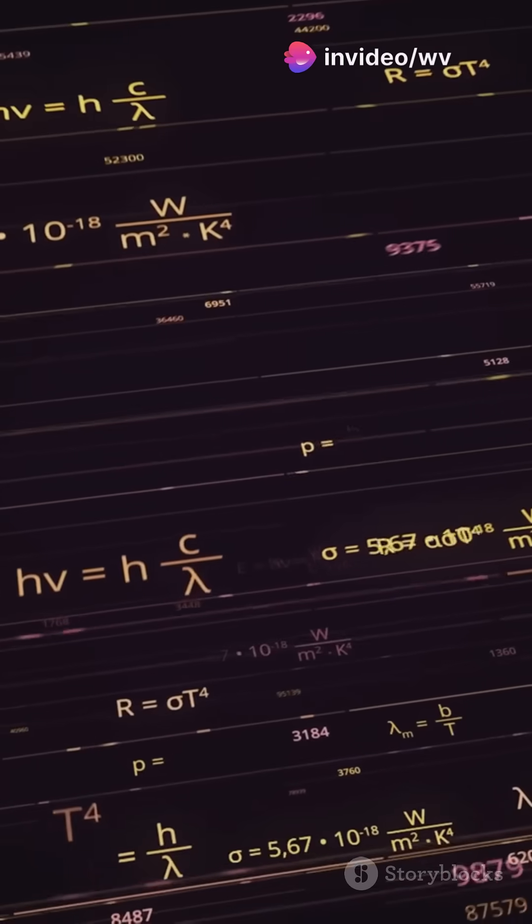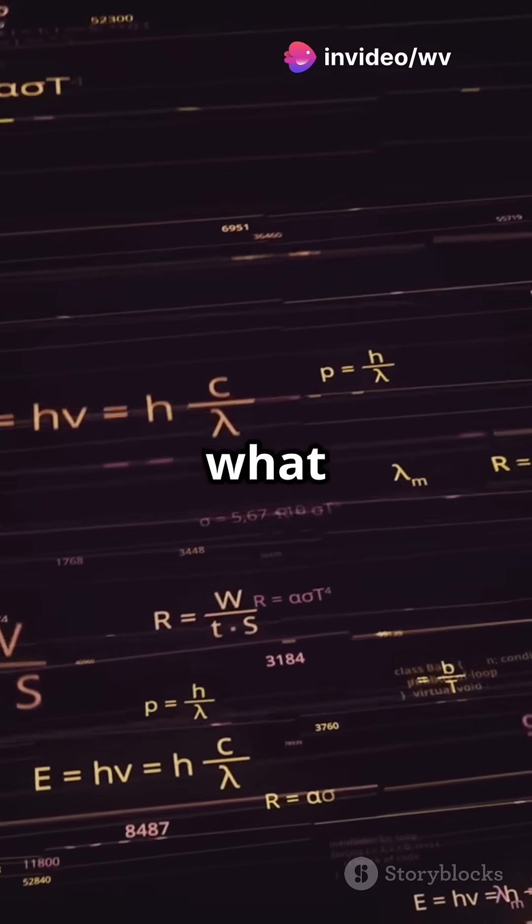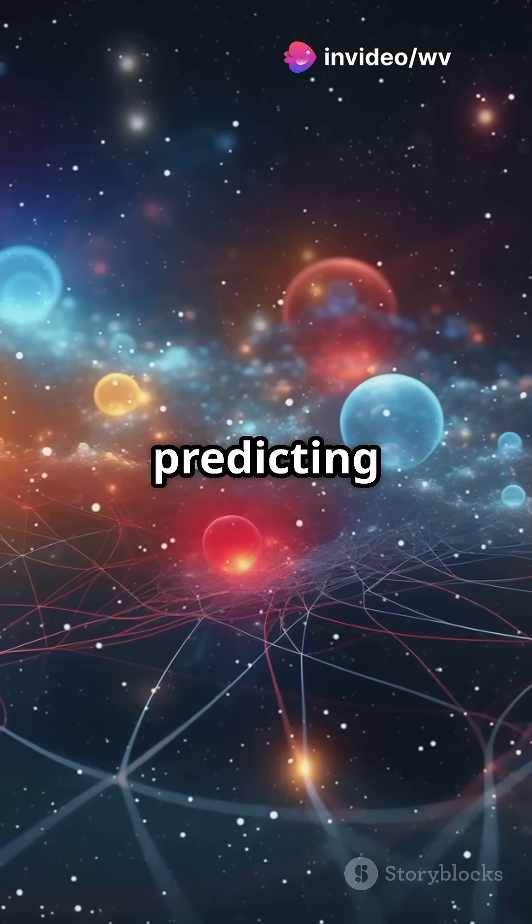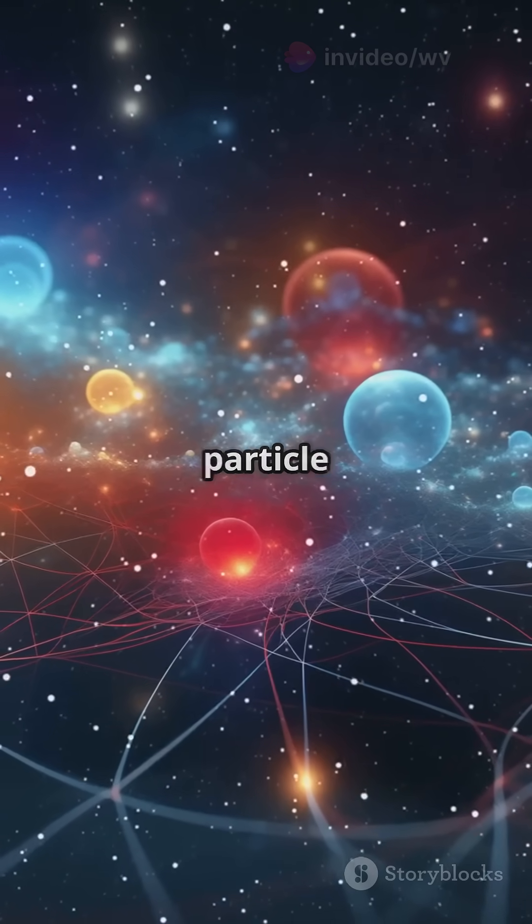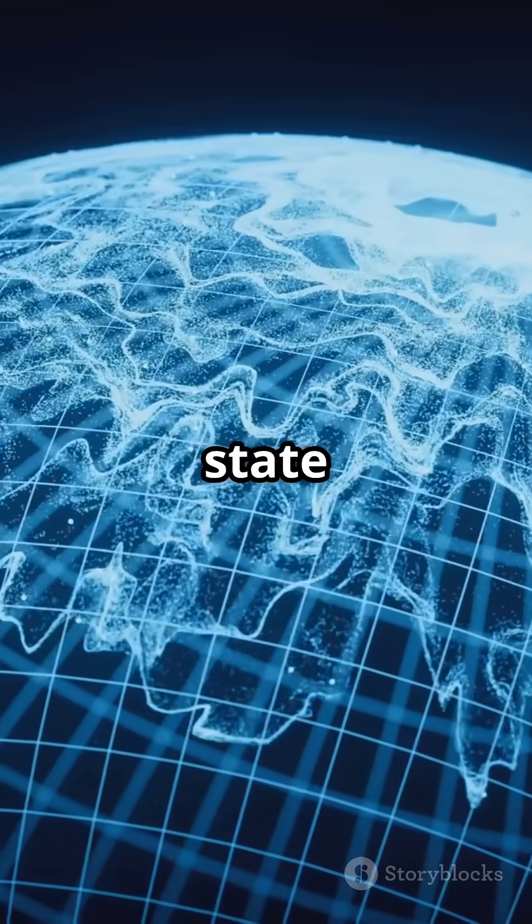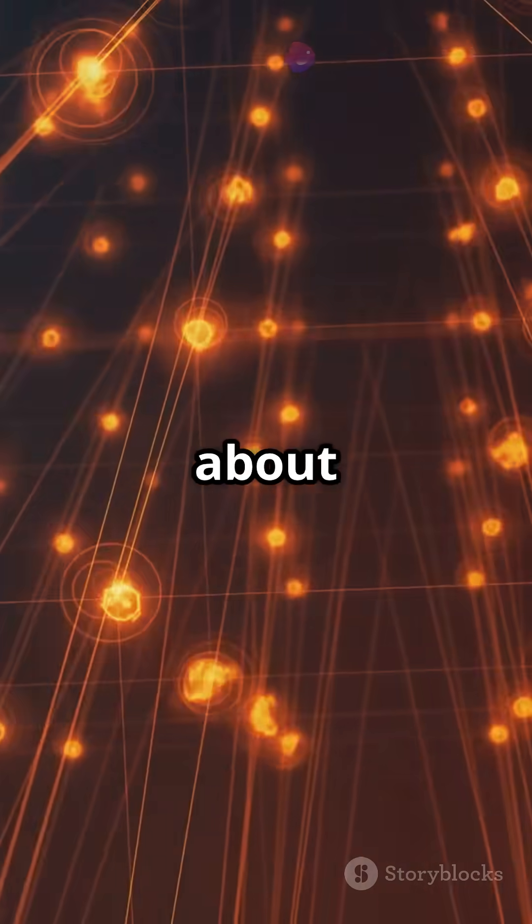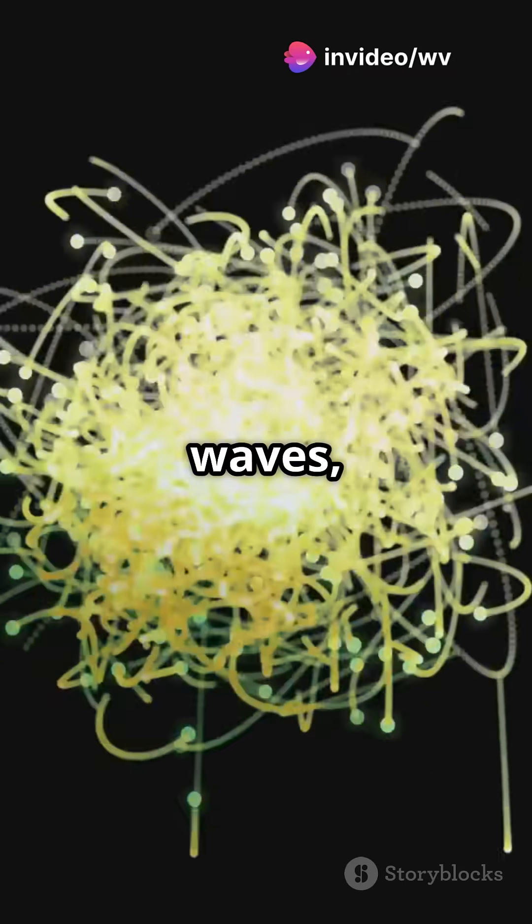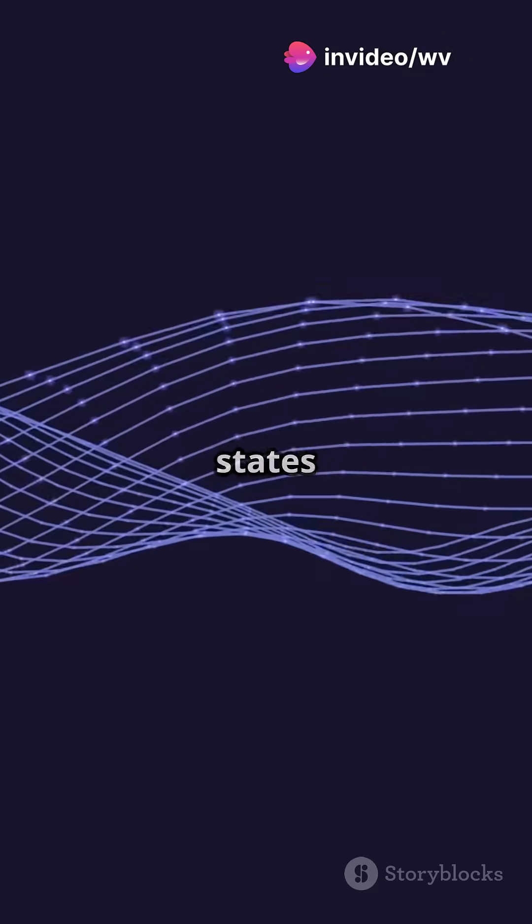But why is it so damn complicated? Because it's not describing what we see. It's predicting probabilities of where a particle might be, how fast it's going, and even whether it exists in a particular state or not. We're talking about a world where particles behave like waves and can be in multiple states at once.